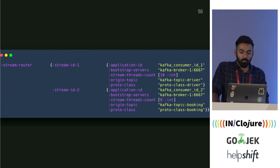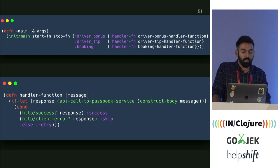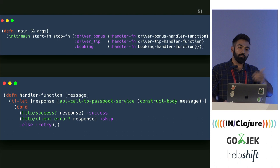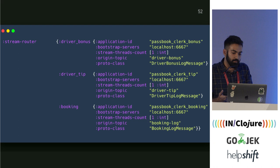As an abstraction, streams run as separate services but still in the same infra and codebase. The code for Passbook Clerk reads from driver-bonus, driver-tip, and booking topics, each handled by a different handler function. It made sense to have them in a single codebase because the handler functions mostly look the same — construct the body for that message and make an API call. The construct-body part is separate for each stream, but everything else is the same. You can also manage config per stream — if driver-bonus has low throughput, one thread; if driver-tip has high throughput, three or four threads.